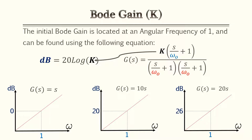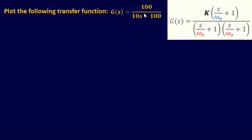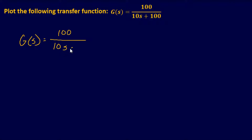Now let's do some examples to get a better understanding of how the transfer function plots on a Bode plot. For the first example, we'll plot the transfer function 100 over (10s + 100). This is in the s domain, so if it's not already simplified, you'll need to simplify it. The goal is to make the equation look like the standard form from the slides, which makes it easier to plug into your Bode plot.